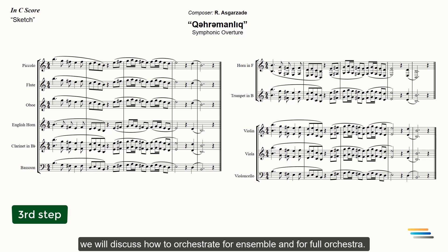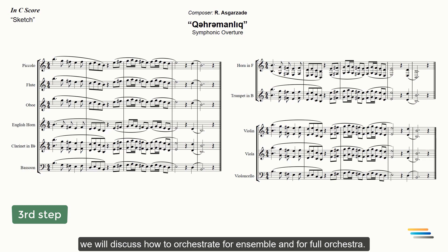The third step is to choose needed instruments and make your own device. In the next lectures, we will discuss how to orchestrate for ensemble and for full orchestra. Let's write your melody and make possible devices till the next lesson. We have done our lecture. Thanks for watching. Bye for now.